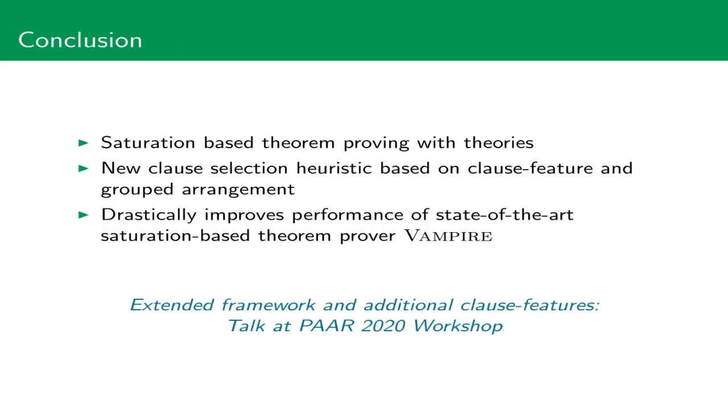Summing up, we looked at saturation-based theorem proving with theories, and in particular at applications where only lightweight theory reasoning is required. We introduced a new clause selection heuristic, which is based on a clause feature which measures the amount of theory reasoning and on grouped arrangements. Our experiments suggest that this new technique drastically improves the performance of our saturation-based theorem prover Vampire. Thank you.